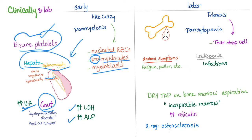You can have high LDH and high ALP (alkaline phosphatase). Later, there is fibrosis and pancytopenia, and you will see the sad teardrop cell — the bone marrow is fibrosed and these cells are deformed. The marrow is shedding tears as red blood cells; they are called teardrop cells.